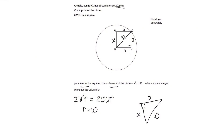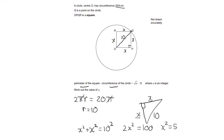Using Pythagoras, x squared plus x squared equals 10 squared, so 2x squared equals 100. Dividing both sides by 2 gives x squared = 50. Taking the square root of both sides gives ±√50, but because it's a length it must be positive, so x = √50.